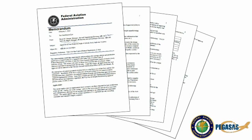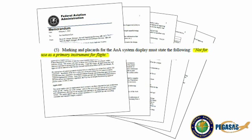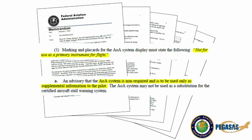The FAA has disseminated a press release indicating that they are streamlining the process for approval of angle of attack equipment in various aircraft. Within the press release design requirements, the FAA has mandated that a placard be placed indicating that the AOA system is not for use as a primary instrument for flight. Further, within the operational limitations section, they have stated that an AOA system is non-required and is to be used only as supplemental information to the pilot.